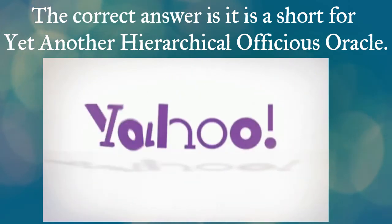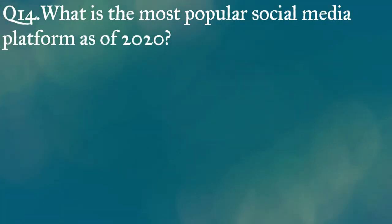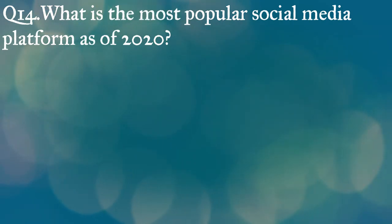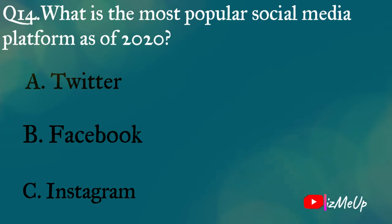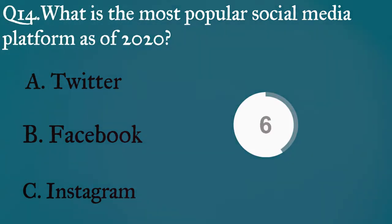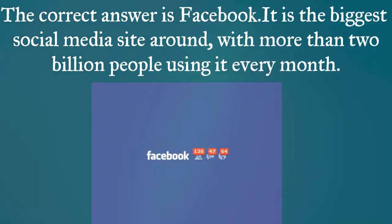Question fourteen: what is the most popular social media platform as of 2020? A) Twitter, B) Facebook, C) Instagram. The correct answer is Facebook. It is the biggest social media site around, with more than 2 billion people using it every month — that is close to a third of the world's population.